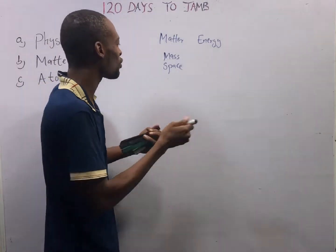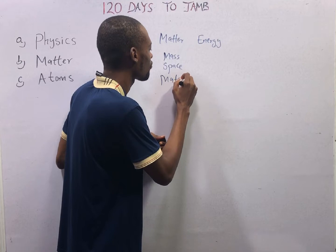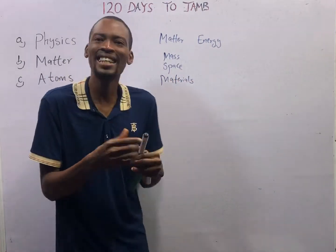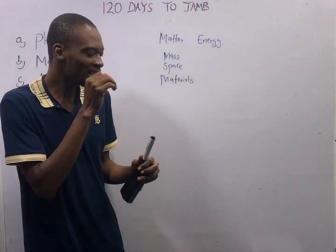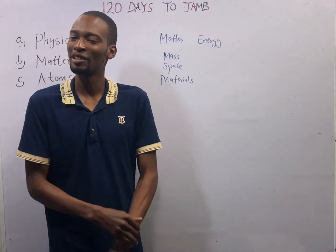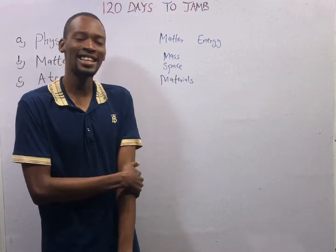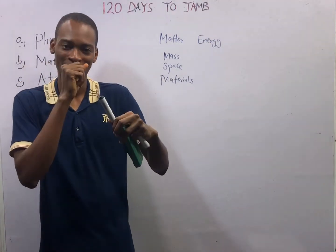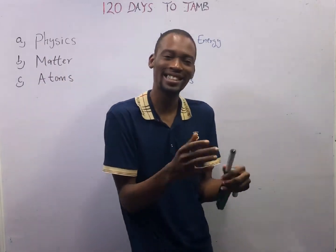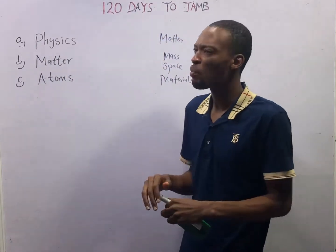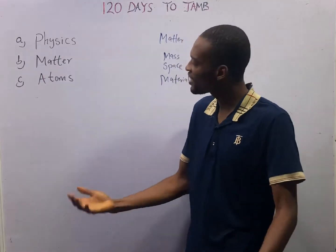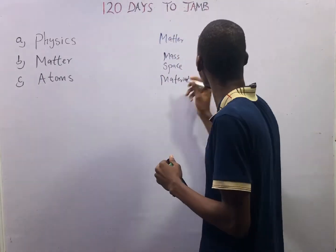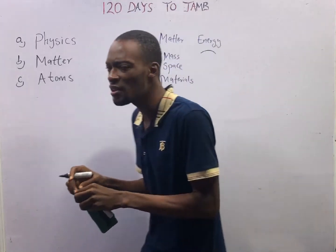Matter is referred to as materials. Energy, on the other hand, is the opposite of matter. If matter is anything that has mass and occupies space, what do we have left? We have things that don't have mass and don't occupy space — that is energy. Energy is simply anti-matter. The universe is therefore made up of matter and energy.